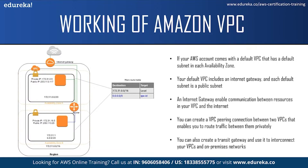You can also create your own VPC and configure it as you want — this is known as a non-default VPC. The subnets you create in your non-default VPC and any additional subnets you create in your default VPC are called non-default subnets. An internet gateway is a gateway that allows your instances to connect to the internet through the Amazon EC2 network edge. Each instance launched in your default subnet has a private IPv4 address and a public IPv4 address. By default, each instance in a non-default subnet has a private IPv4 address but not a public IPv4 address, unless you specifically assign it.